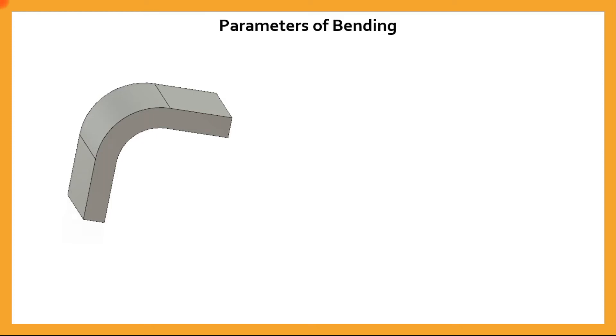Let us have a look at the parameters of bending. Here is a sheet metal which has been bent. The length of the sheet metal which undergoes the bending is the length of bending, as shown in this dimension.